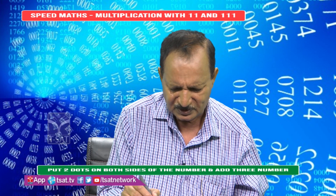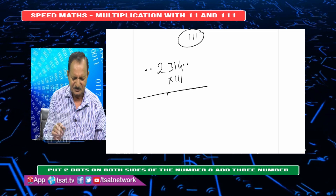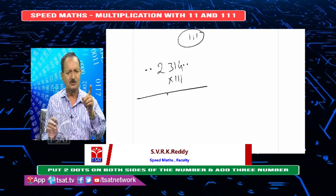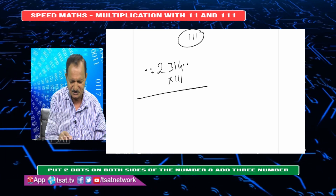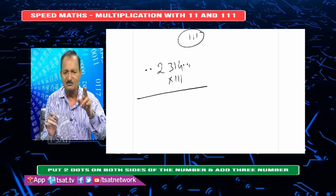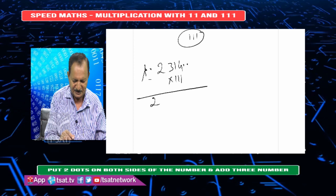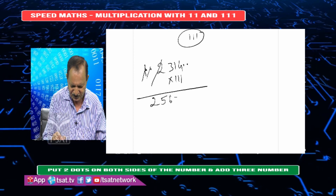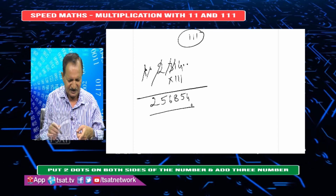Now I will show you how to multiply with 111. This is the same idea. Take 2, 3, 1, 4 into 111. You do not need to multiply — you do not need to do the 11 table. Put 2 dots on either side of the number, making them 0. Now add 3 adjacent numbers: 0 plus 0 plus 2 is 2, next 0 plus 2 plus 3 is 5, next 2 plus 3 plus 1 is 6, next 3 plus 1 plus 4 is 8, next 1 plus 4 plus 0 is 5, and 4 plus 0 plus 0 is 4. The answer is 2, 5, 6, 8, 5, 4.